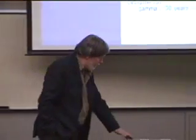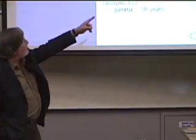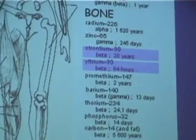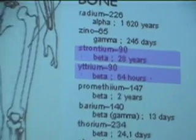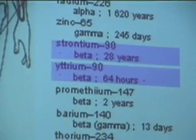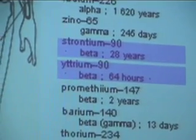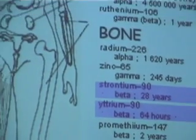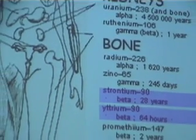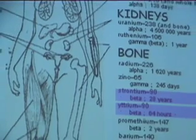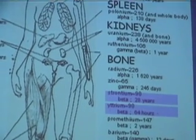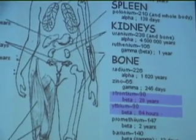Another example is strontium-90, which behaves like calcium. When the body gets strontium-90 in the diet, it stores it in the same places calcium goes — bones, teeth, and mother's milk. That's where it gets transmitted. Strontium-90 also has about a 28-year half-life, so we're talking about another roughly 300 years to clear.